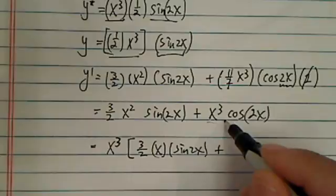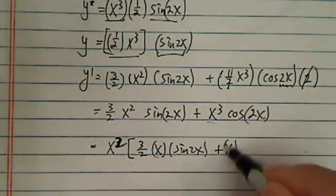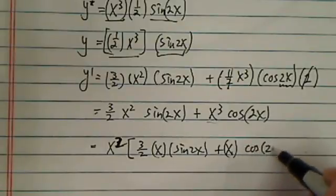Plus x - we're going to only pull the x² out. So x is left here, and you have cos(2x).